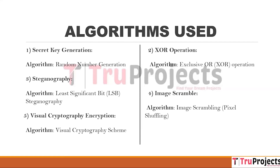For visual cryptography encryption, a visual cryptography scheme is used. Visual cryptography splits the image into two shares, and both shares are sent to the receiver. Reverse operations are then performed at the receiver's end to decode the hidden image.